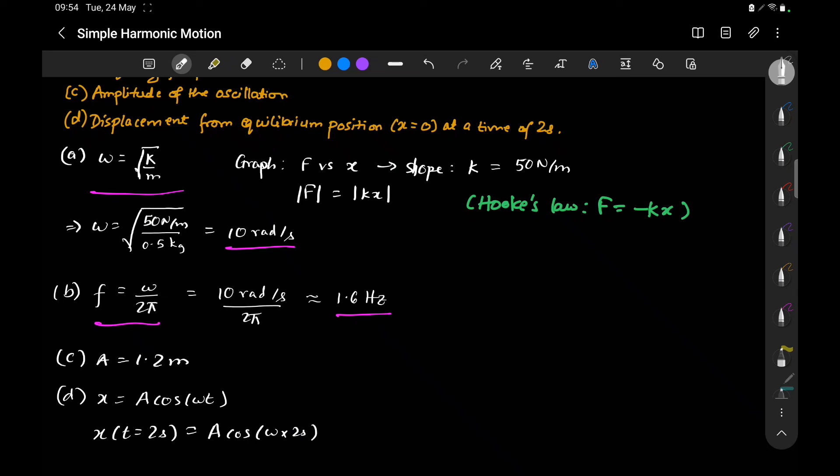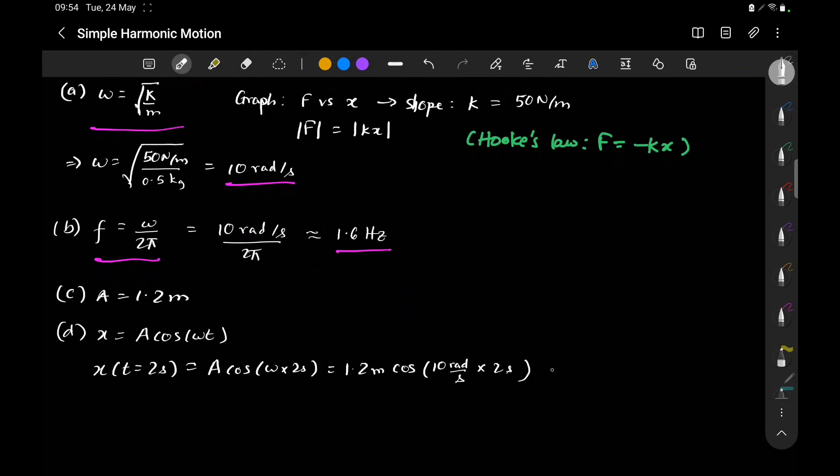x at t = 2 seconds is A cos(ω × 2). Plugging in the values, calculating this gives us roughly 0.5 meters.